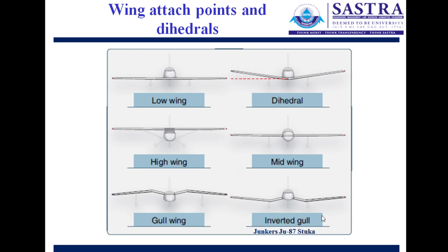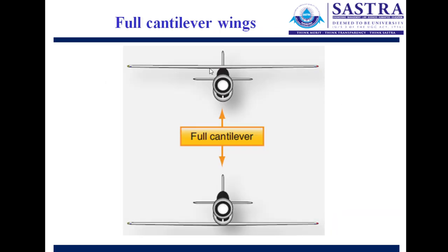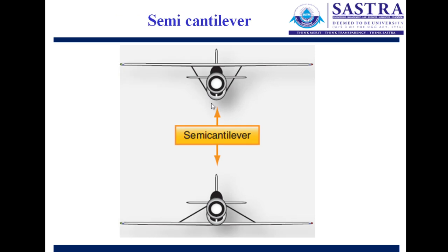A cantilever beam is fixed at one end and free at the other. A full cantilever wing requires no external bracing and can be attached at the top or bottom of the fuselage — this configuration is found on most passenger aircraft. A semi-cantilever wing, found in general aviation, trainer, and sports aircraft, is supported by diagonal struts.